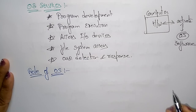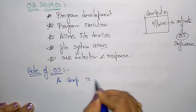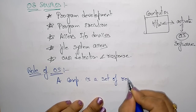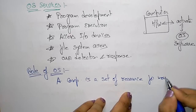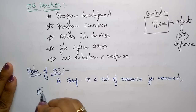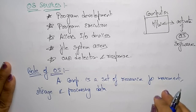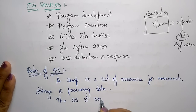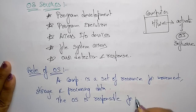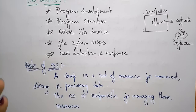Now, what is the role of the operating system? A computer is a set of resources — we all know that. A computer consists of a set of resources for movement, storage, and processing of data. The operating system is mainly responsible for managing these resources: managing the movement, storage, and processing of data inside the computer.